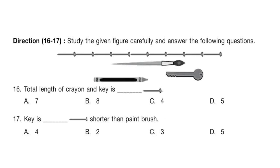Questions 16 and 17: Study the given figure carefully and answer the following questions. Question 16: What is the total length of the crayon and key in pins? The length of the crayon is 3 pins and the key is 2 pins. So the correct answer is option D, which is 5.